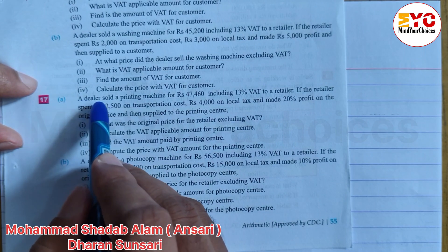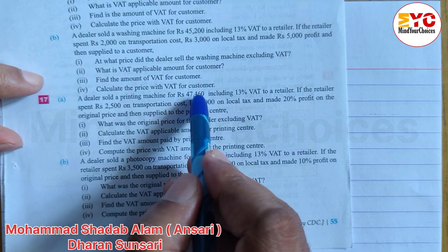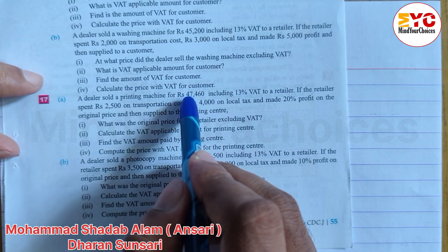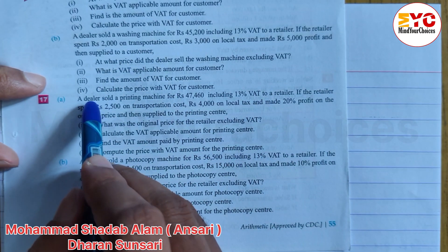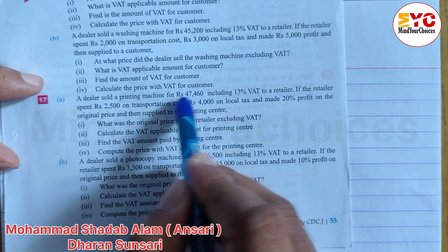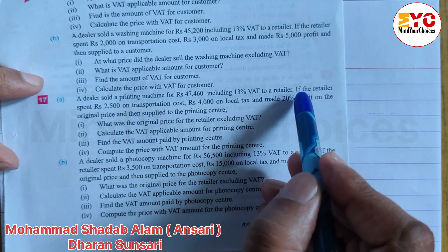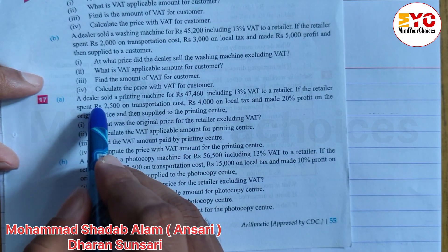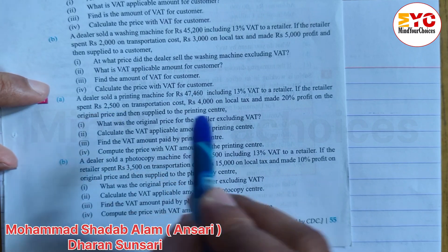A dealer sold a printing machine for Rs. 47,460 including 13% VAT to the retailer. The printing machine is Rs. 47,460. If the retailer paid, the transportation cost is Rs. 2,500.